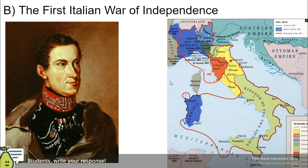This kicked off what's called the First Italian War of Independence, where these patriots convinced the king, Charles Albert, of Piedmont-Sardinia that the time had come to start trying to unite the Italian people. They united under Charles Albert's banner, declared him their king, and started trying to build a united Italy.